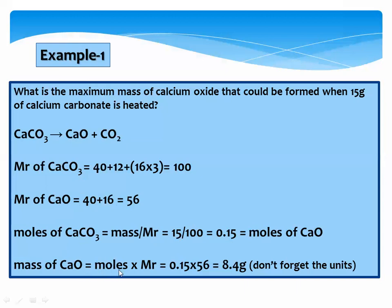Mass of calcium oxide equals moles multiplied by relative molecular mass. The moles are 0.15 and the relative molecular mass of calcium oxide is 56. Multiply them: 0.15 × 56 = 8.4 grams. Don't forget the unit — we must place grams because we are calculating mass.